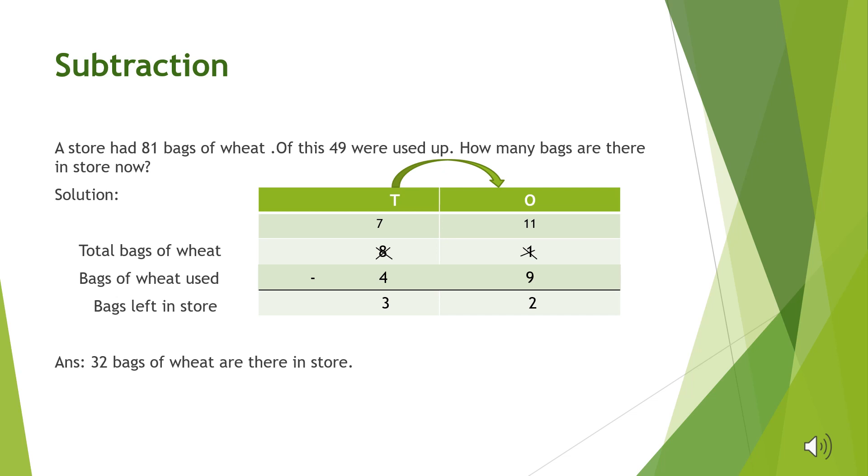What is 81? 81 is the total number of bags of wheat. So the first statement will be total bags of wheat, and we will write 81 next to it.